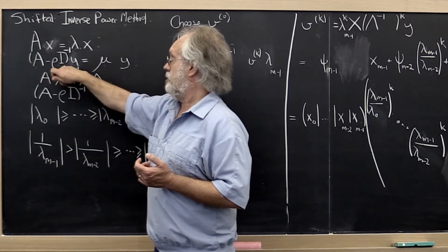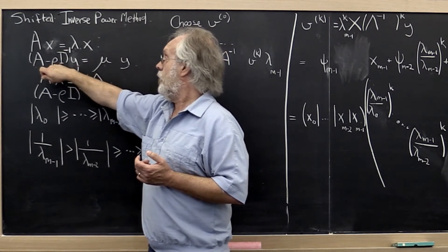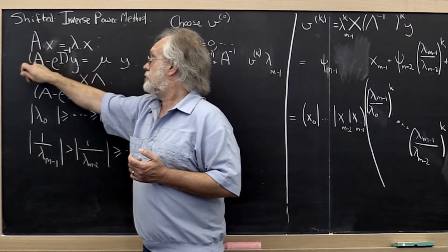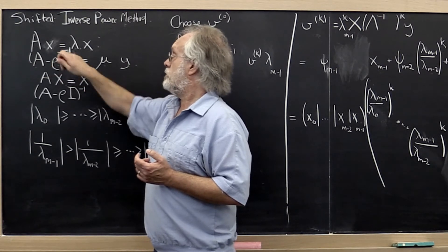This is known as a shifted matrix. You're shifting A by rho. But we're interested in here what happens to that matrix when we invert it.